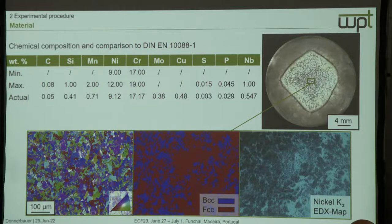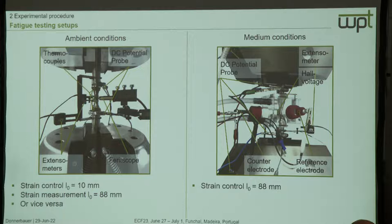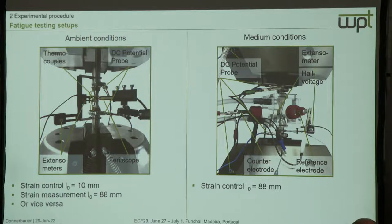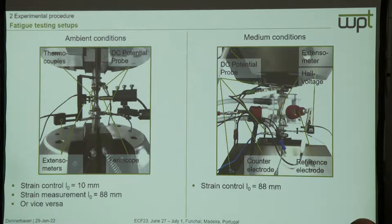Here are the fatigue testing setups: on the left side for ambient conditions and on the right side for medium conditions. At ambient conditions you can see the ferritescope applied to the specimen — a commercial system usually used to evaluate alpha-prime martensite, for example after welding processes in industry. We also applied the DC potential probe, thermocouples, and extensometers. I used one small extensometer with a gauge length of 10 mm and also one at the clamping diameters with a gauge length of 88 mm.